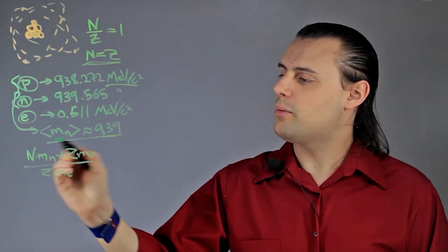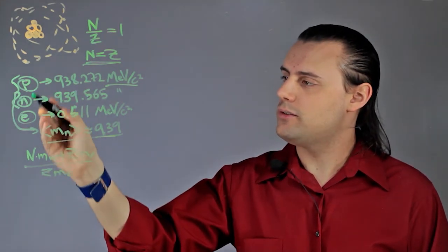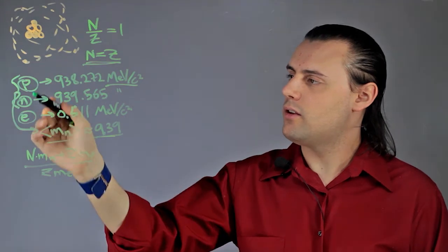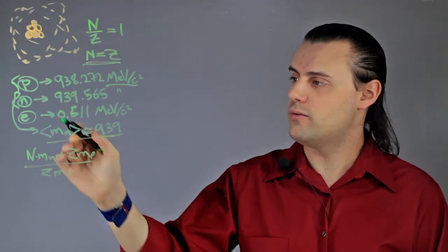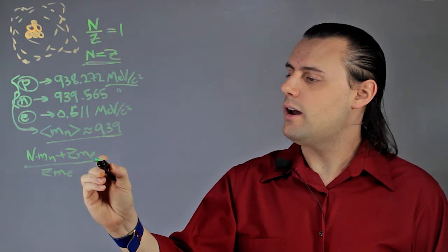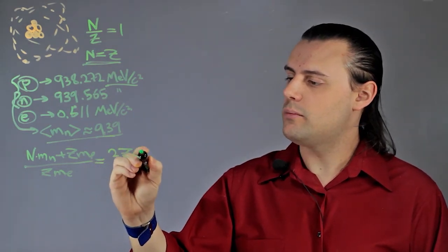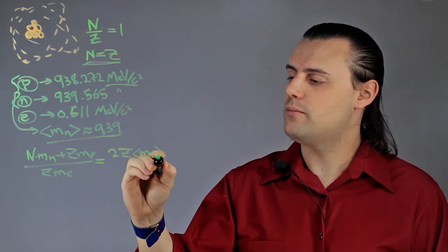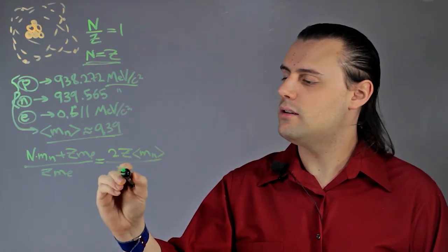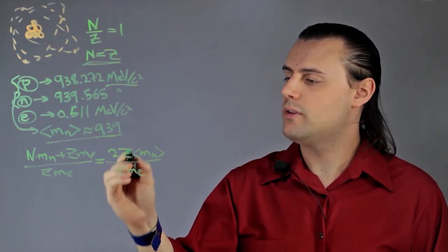Making this approximation, because these two masses are very similar, they're almost the same compared to the mass from the point of view of an electron, I have 2 times z times the average mass of a neutron divided by z mass of an electron.